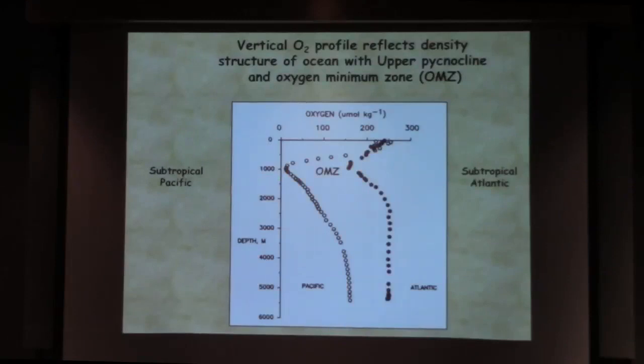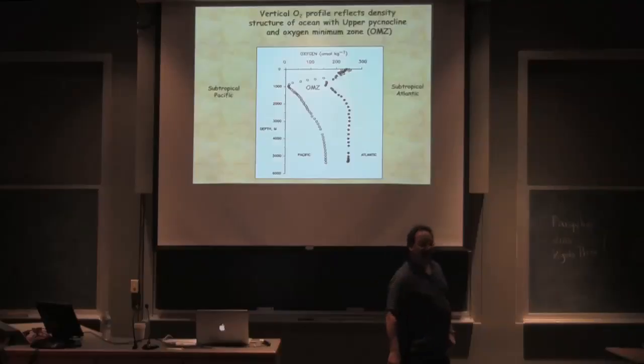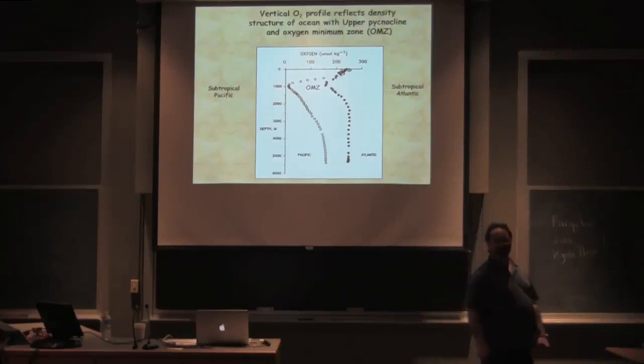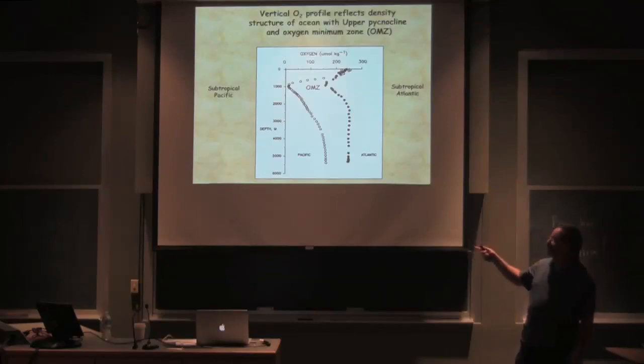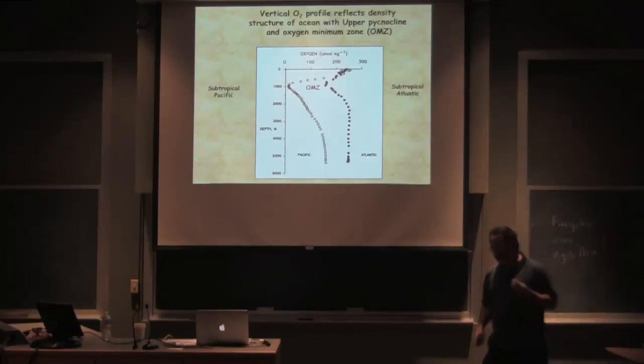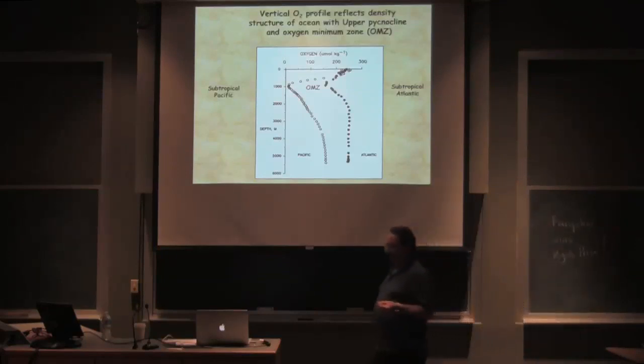Now where does the ocean get replenished with oxygen? The only place the ocean can possibly get replenished with oxygen: at the surface. The atmosphere is the big reservoir of oxygen on our planet.